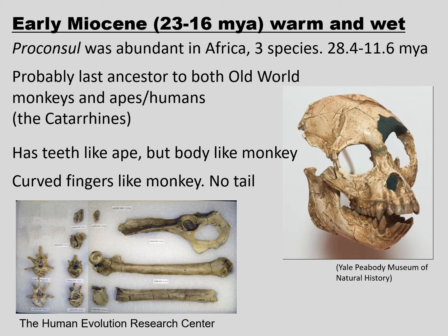The early Miocene, 23 to 16 million years ago, was warm and wet. And it's during this part of the epoch that we see probably the last ancestor to both Old World monkeys and apes and humans — that is, the Catarrhines.